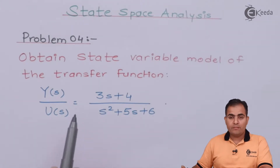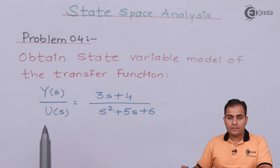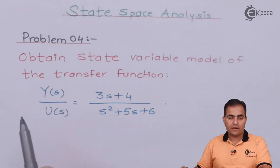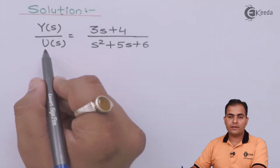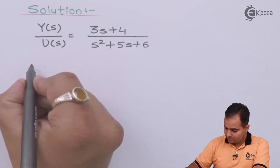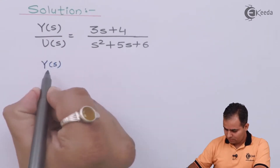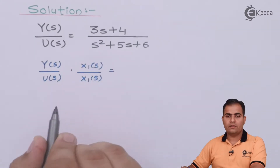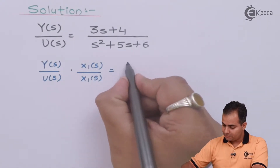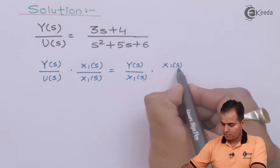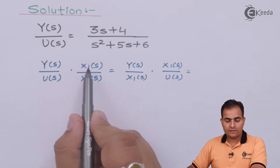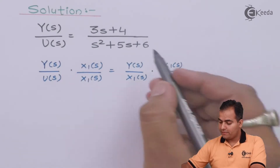One thing to note: Y(s) and U(s) are given but the input variable is missing. We will substitute an input value on the left hand side. Let's say the input is x1(s). We will multiply and divide the left hand side by x1(s) — keeping one x1(s) in the denominator of Y(s) and the other x1(s) in the numerator, paired with U(s), while the right hand side remains as is.